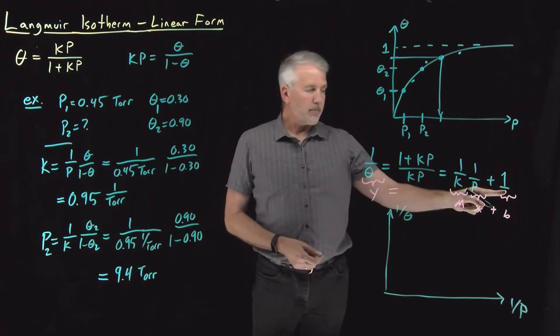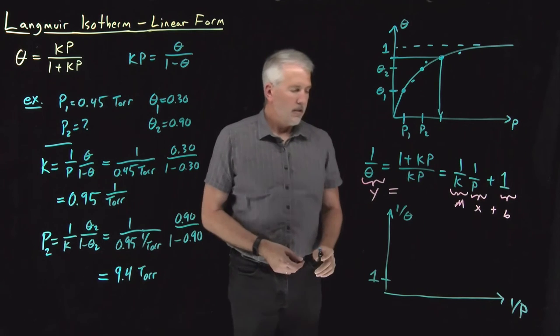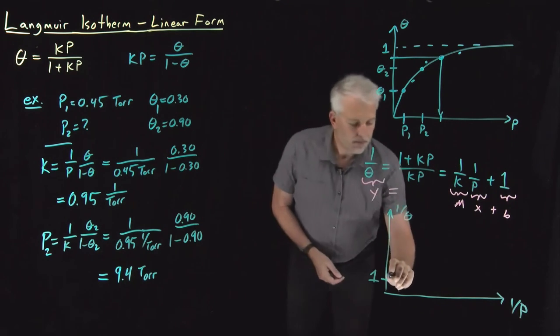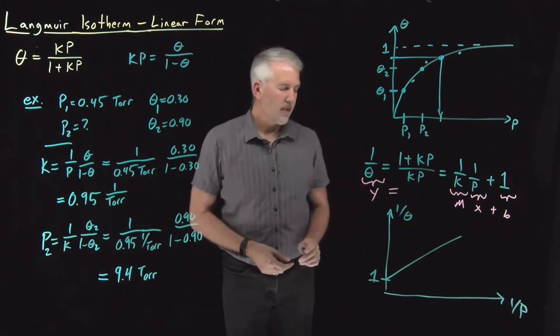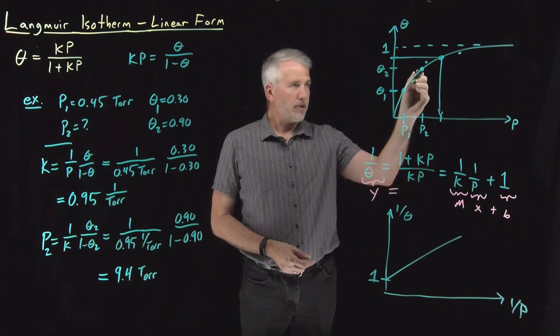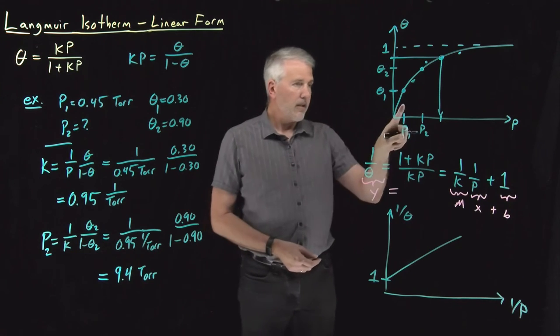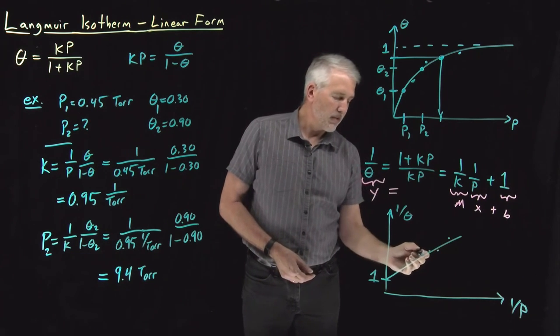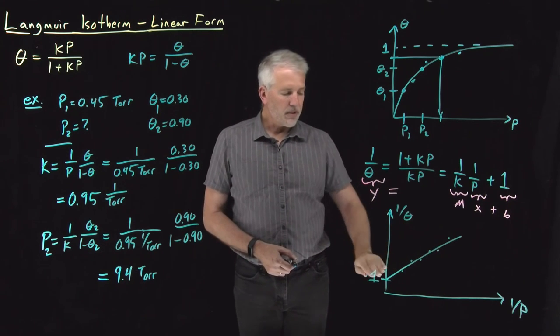The intercept for that line is going to be at one. The slope of that line is going to be one over k. It's going to be a positive slope. And now if I've made a bunch of experimental measurements at different pressures, since I'm plotting one over p, the low pressure measurements are going to be at high values of one over p. So I've got some measurements.